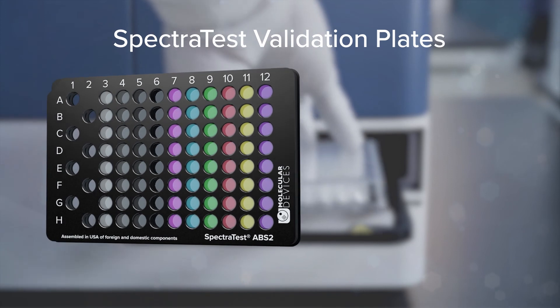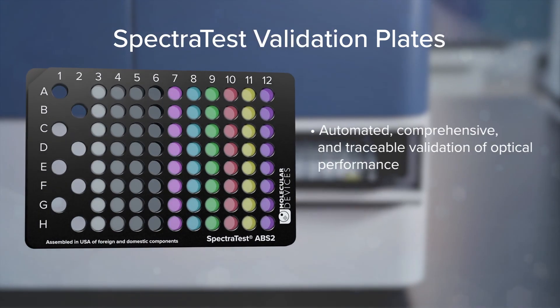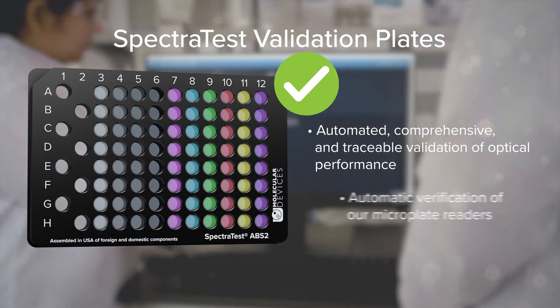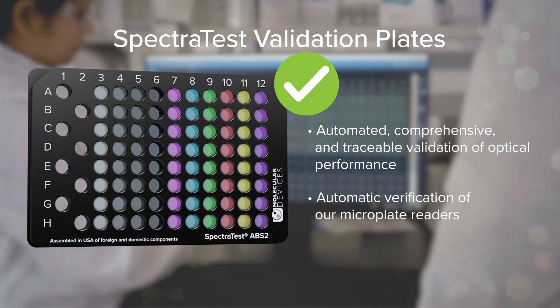The SpectraTest ABS2 Validation Plate provides automated, comprehensive, and traceable validation of optical performance, plus automatic verification of our microplate readers.